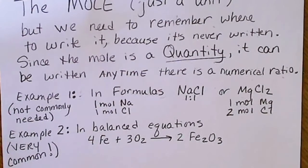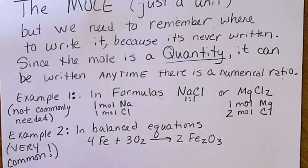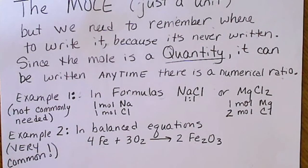A very common example where we are going to need to remember to write the word mole is in a balanced equation. This is also a numerical ratio. So there's four irons for every three molecules of oxygen to make two Fe2O3 compounds.